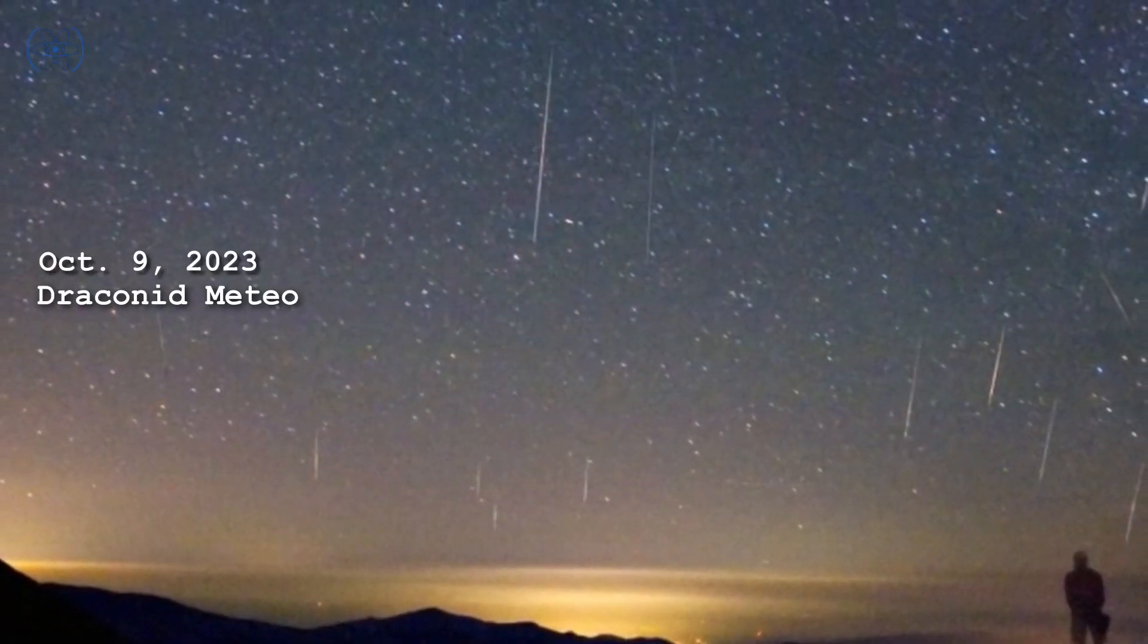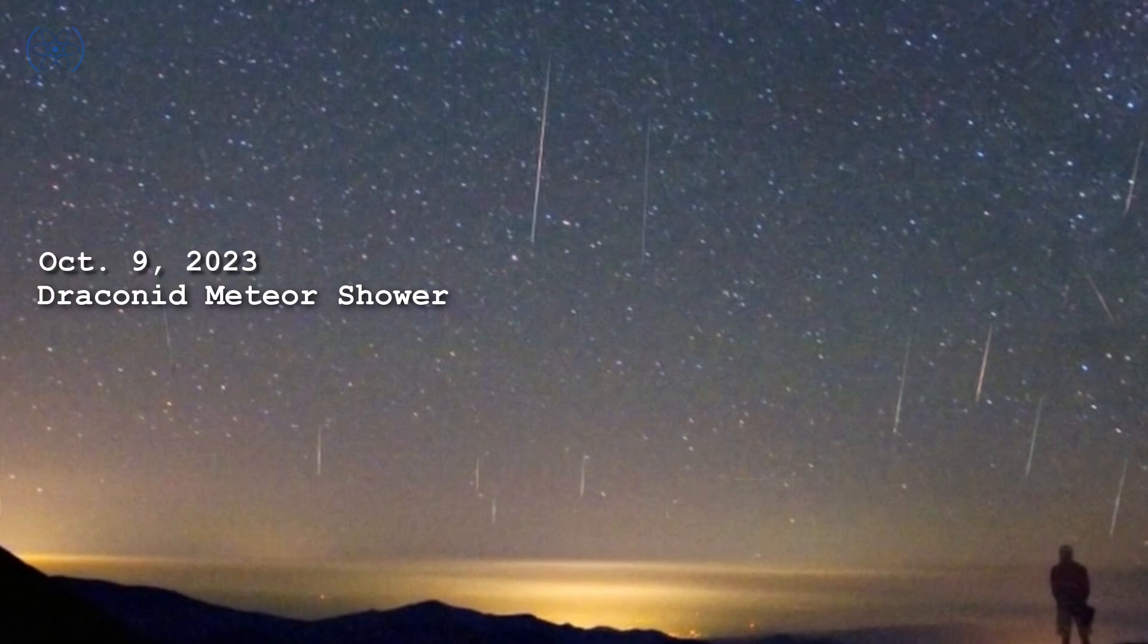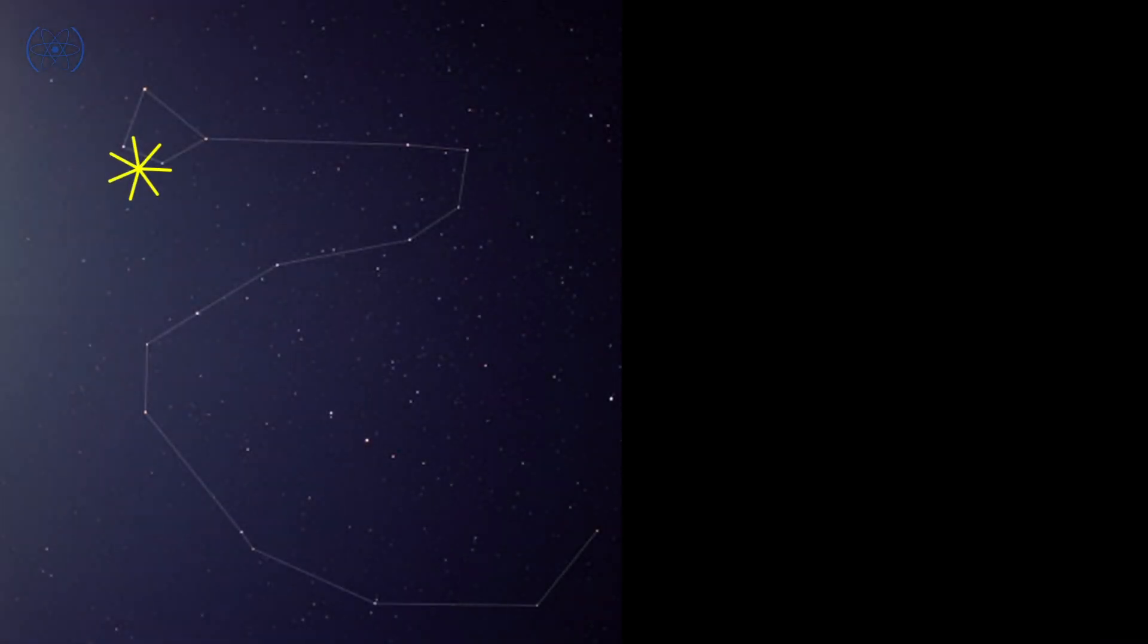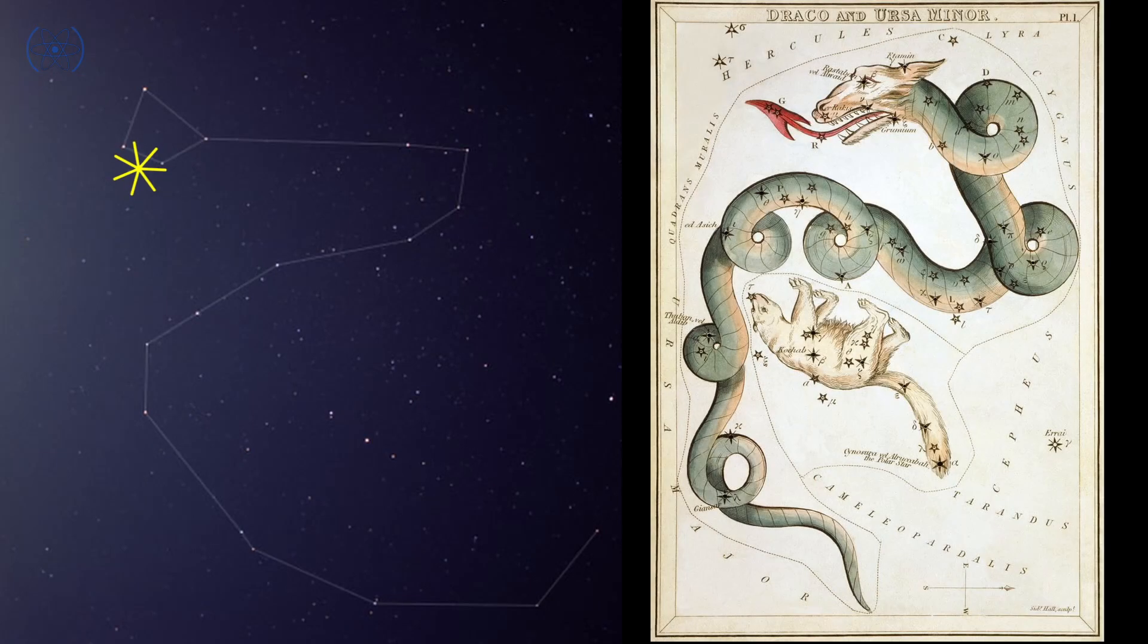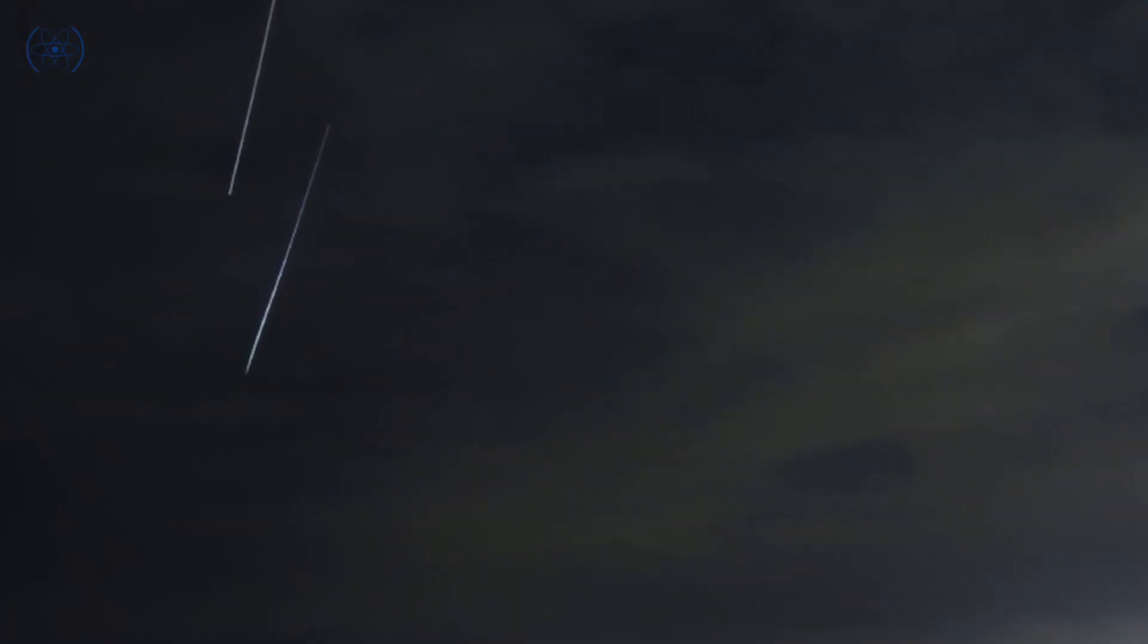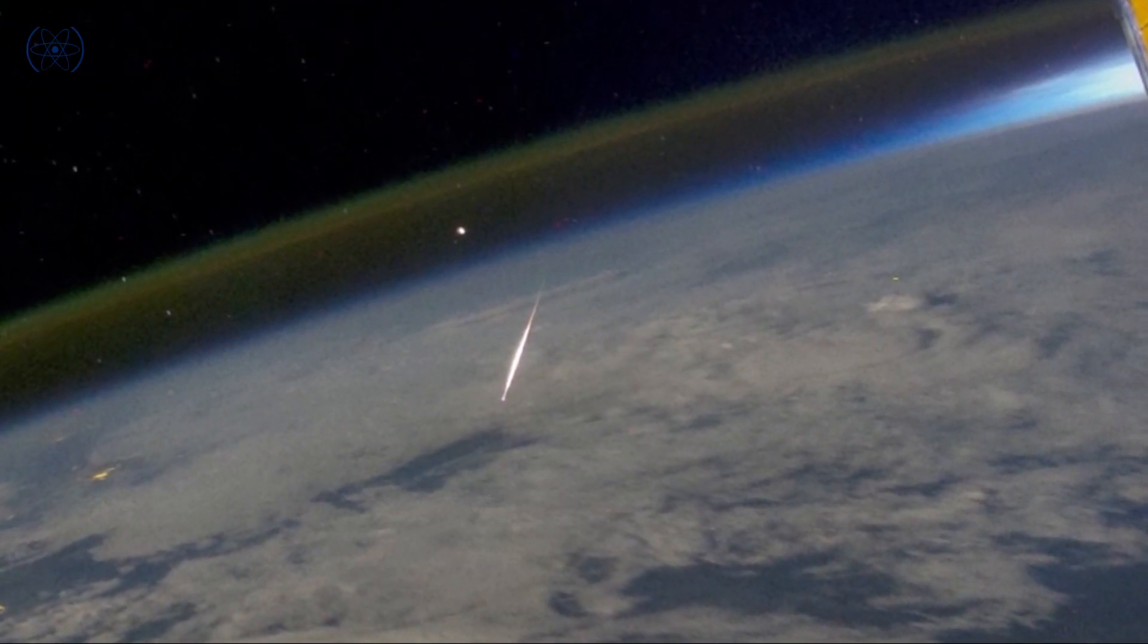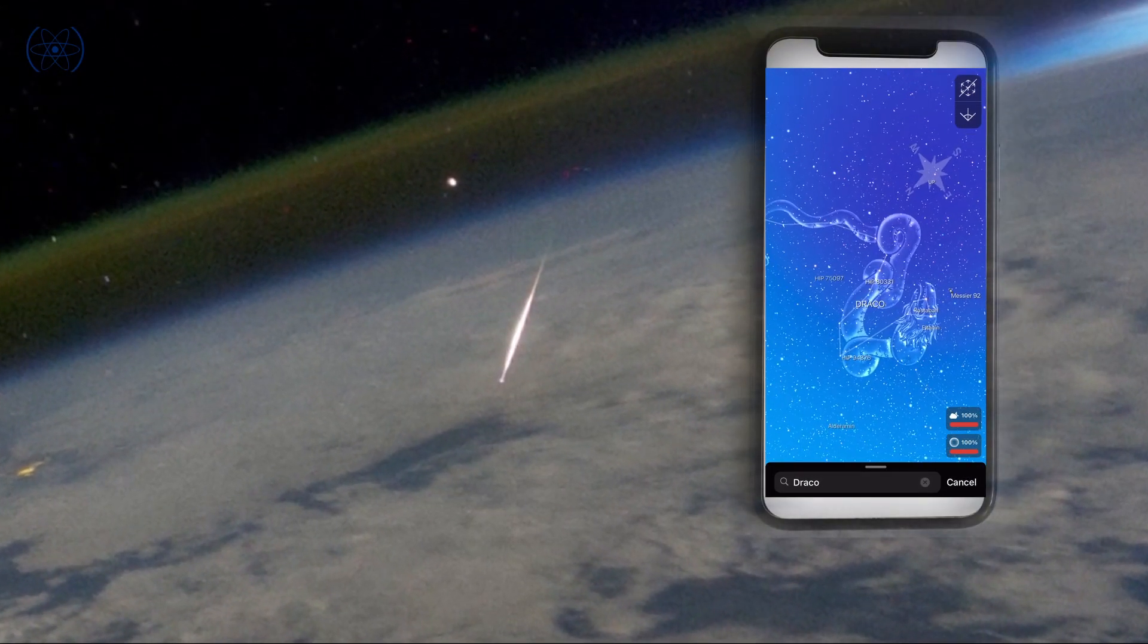The Draconid meteor shower is expected to peak in the early hours of October 9th. The radiant point for the shower lies in the constellation Draco the Dragon. That's the location from which the meteors will appear to originate. The shower is best viewed from the northern hemisphere, or as long as you can see Draco above the horizon. Try using a star-finding app if you have trouble.